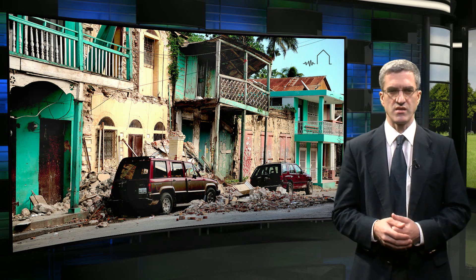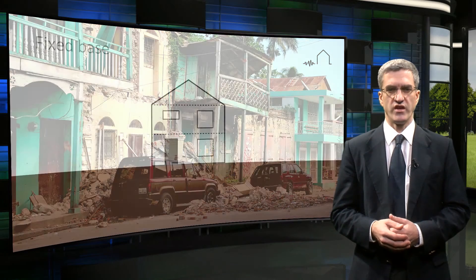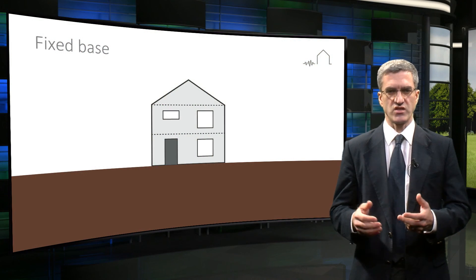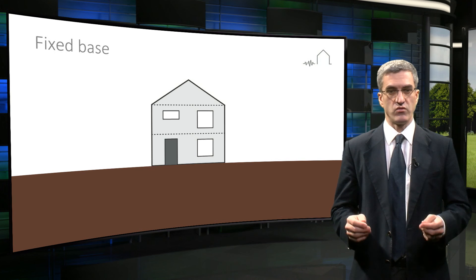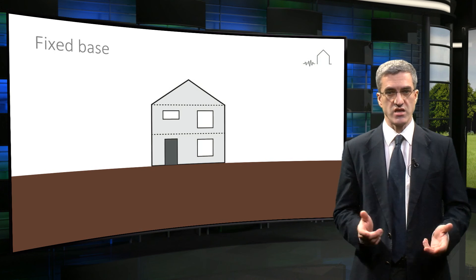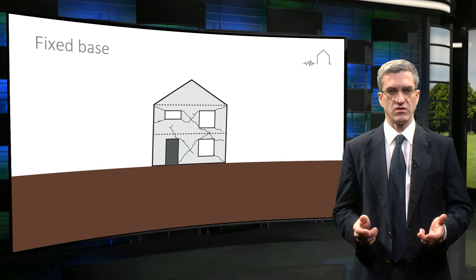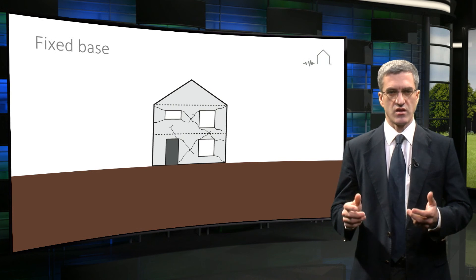Base isolation enables this to be achieved. Conventionally, a house is fixed to the ground by its foundation, and when the ground shakes, the building must resist sudden horizontal displacements.